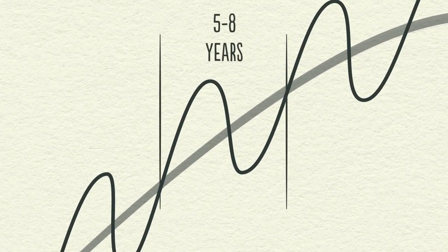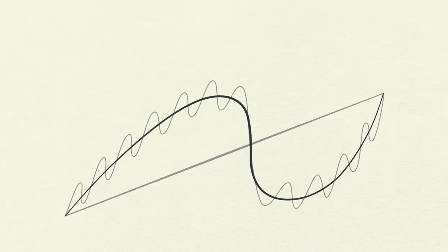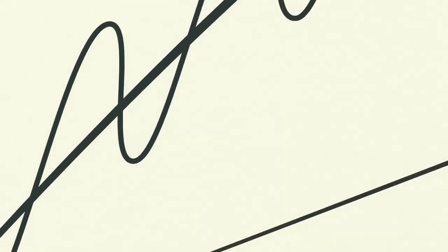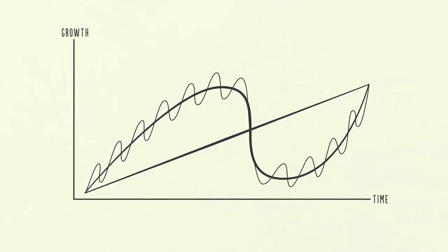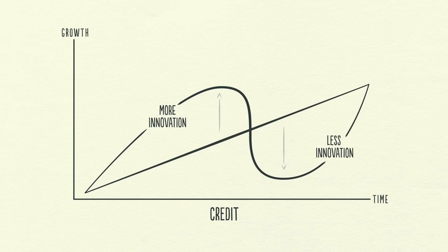Debt swings occur in two big cycles: one takes about five to eight years, and the other takes about 75 to 100 years. While most people feel the swings, they typically don't see them as cycles because they see them too up close, day by day, week by week. Swings around the line are not due to how much innovation or hard work there is — they're primarily due to how much credit there is.